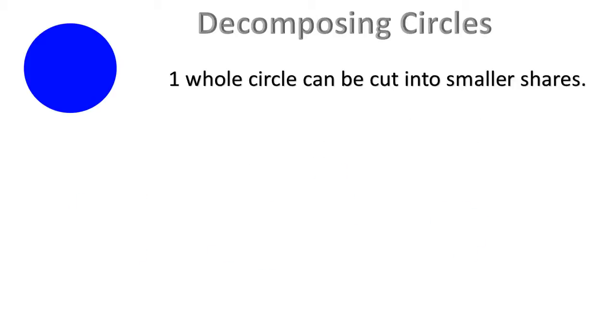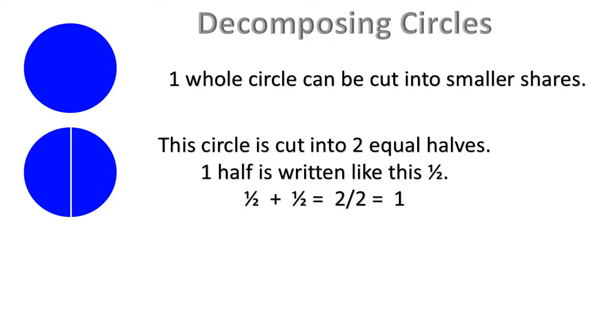Decomposing circles. 1 whole circle can be cut into smaller shares. This circle is cut into two equal halves. 1 half is written like this. 1 forward slash 2. 1 half plus 1 half equals 2 halves equals 1 whole.